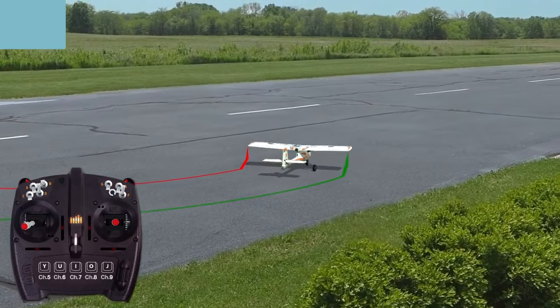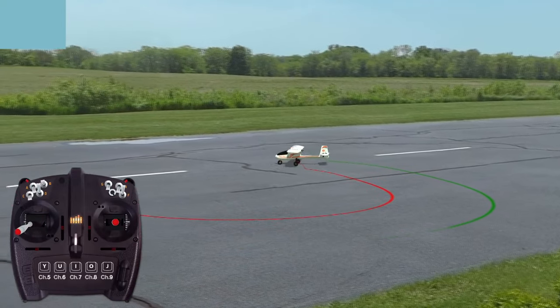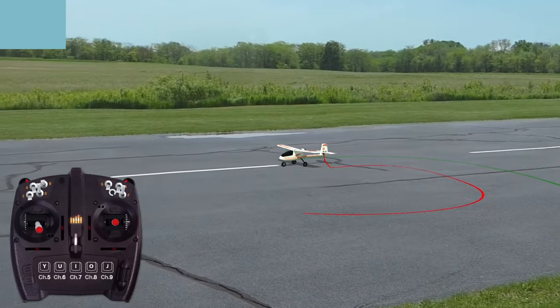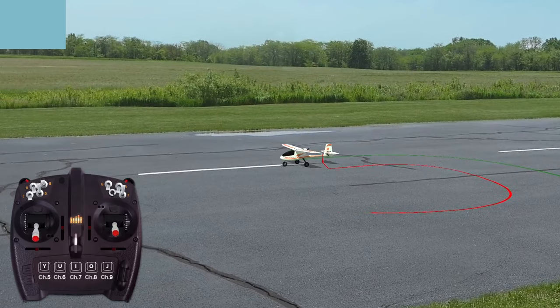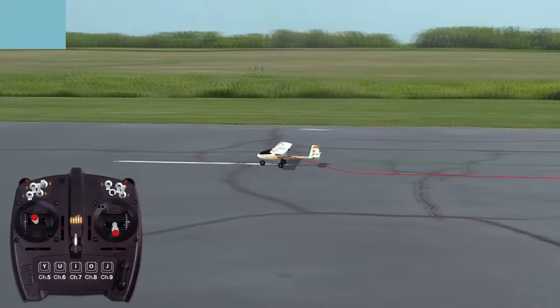If the training plane is set up stock, the rudder and aileron are not mixed together in intermediate mode. Therefore, taxi and takeoff are performed using the left stick rudder control. The angle of the climb-out will be controlled using the elevator.